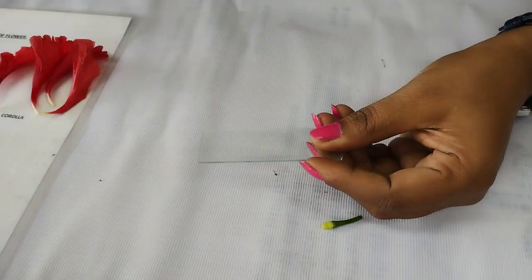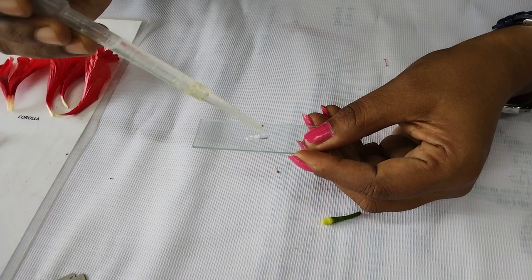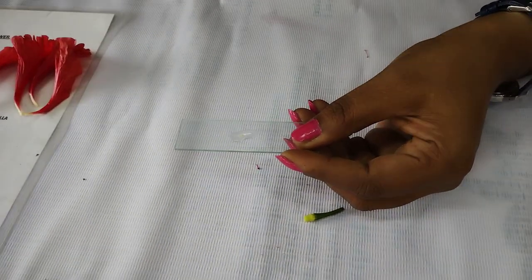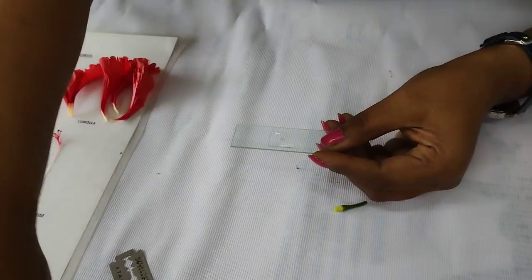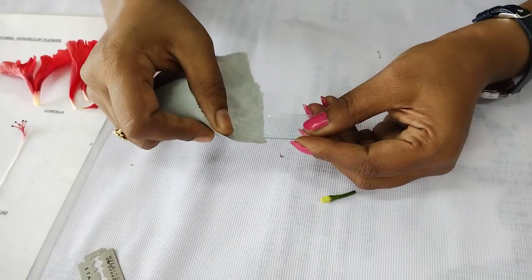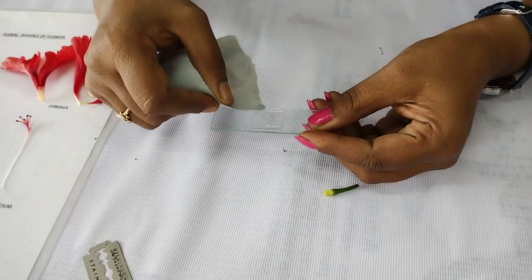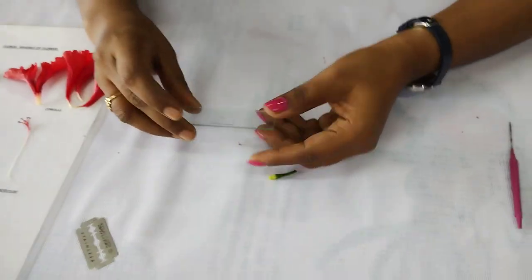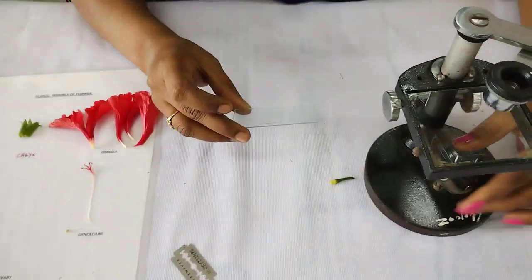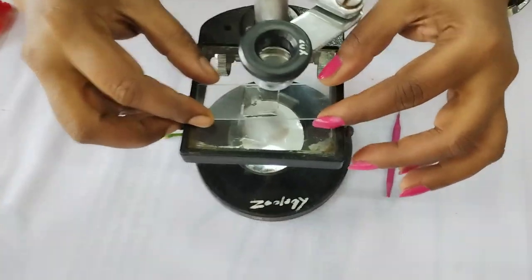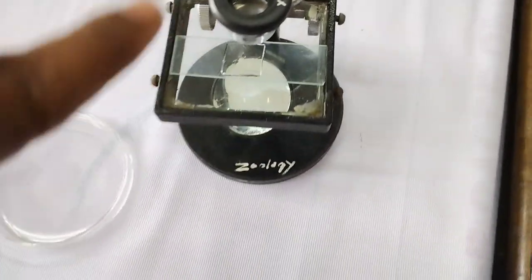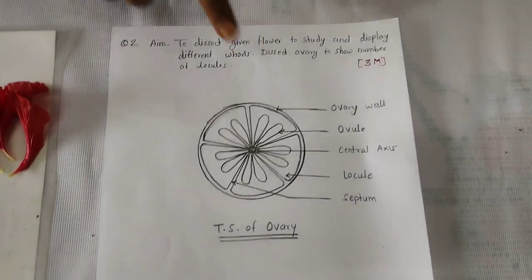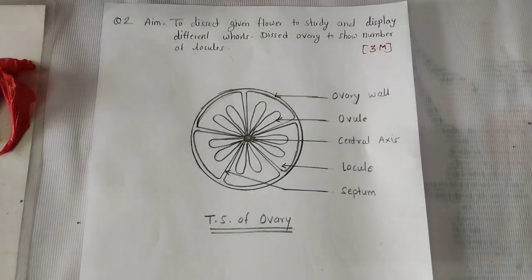Place the section on the slide and add one drop of water. Take a cover slip and wipe excess water with filter paper. This slide is now ready — it is the TS of the ovary. Take a simple microscope, adjust it properly, place the slide on the stage, and observe. Draw the diagram showing five locules, each containing two ovules, and label accordingly.